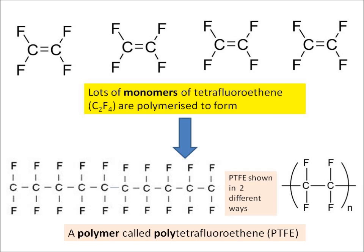Down at the bottom you can see the polymer which is formed, which is called polytetrafluoroethene. It can be shown in two different ways — both on the bottom left and on the bottom right — the two ways of writing polytetrafluoroethene. You also need to know about two other examples, which are propene and chloroethene.